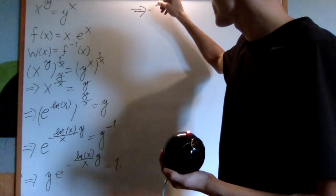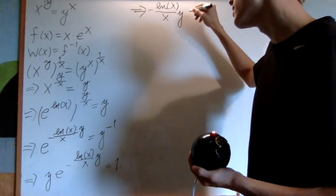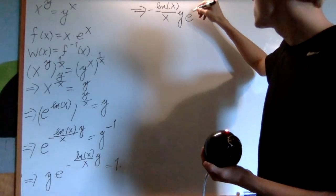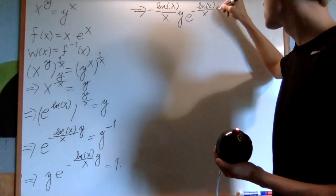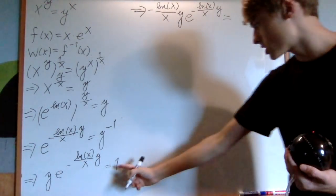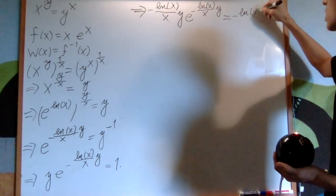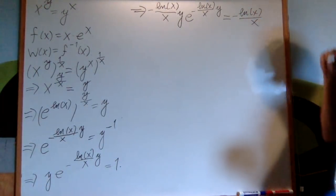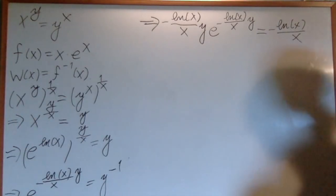So, I get negative natural log of x over x times y and times e to the negative natural log of x over x, y. And then on the right-hand side, which is a 1 multiplied by negative natural log of x over x. Ha! Look at that. One variable on one side. We came back, wrapped it all the way around. We went back to one variable on one side.